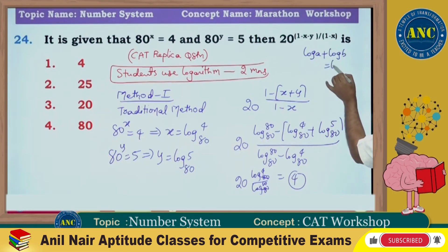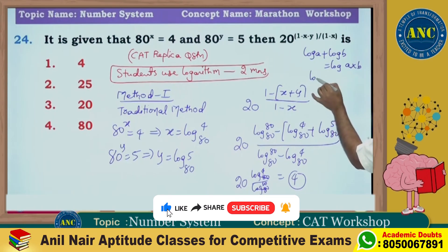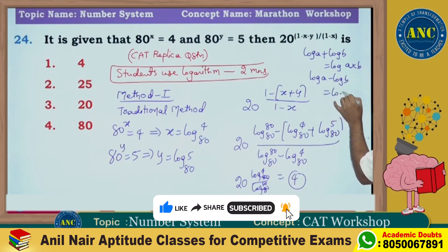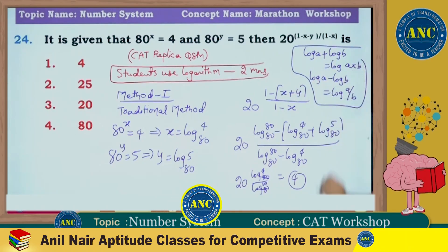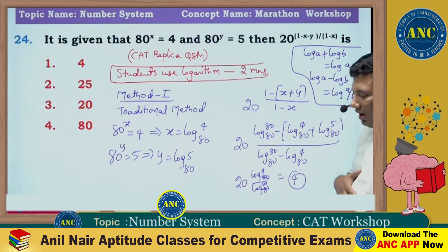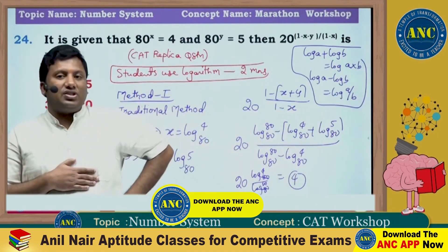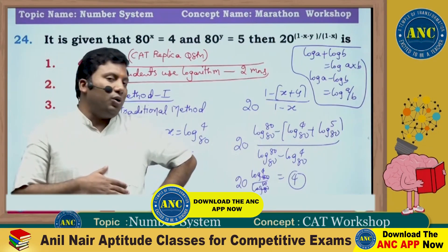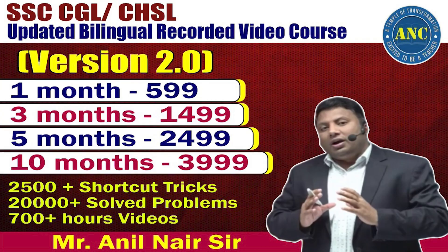This is the traditional method, which requires understanding of logarithm rules: log a + log b = log(a×b), and log a − log b = log(a/b). If you know these two, you can solve it. That is the traditional method — now let us see Anil Nair's way of solving.